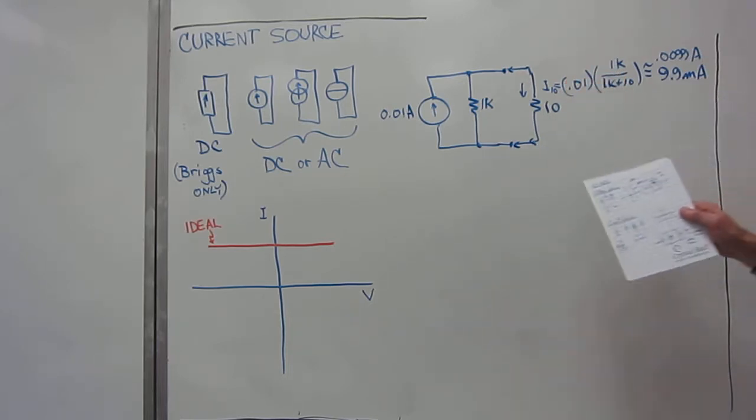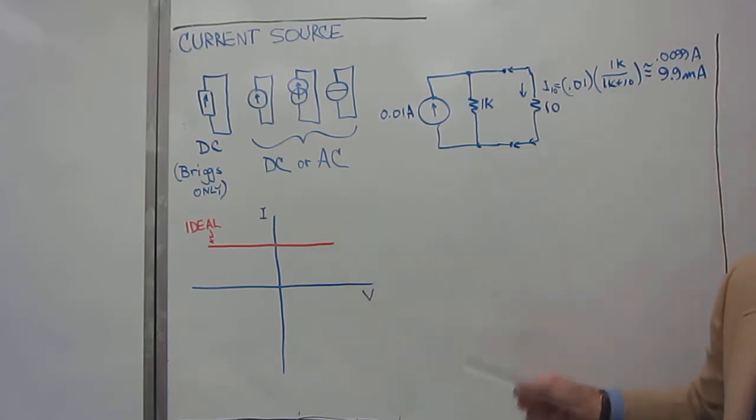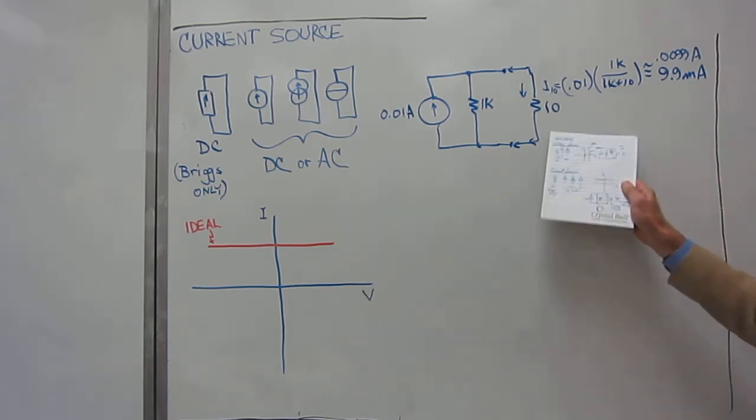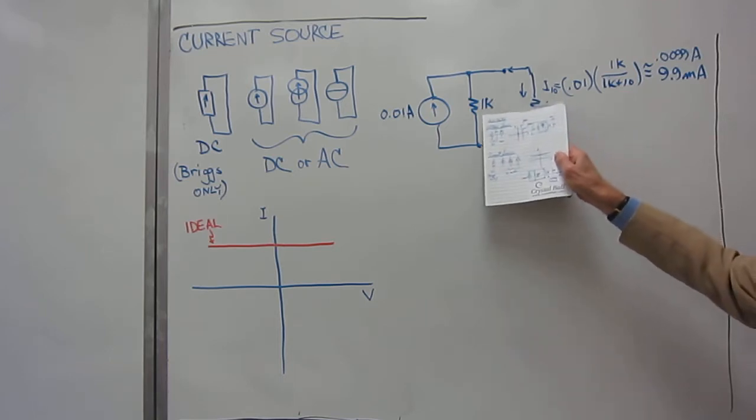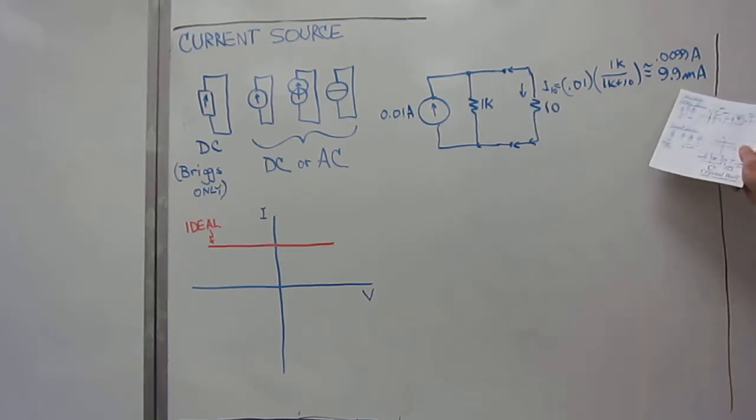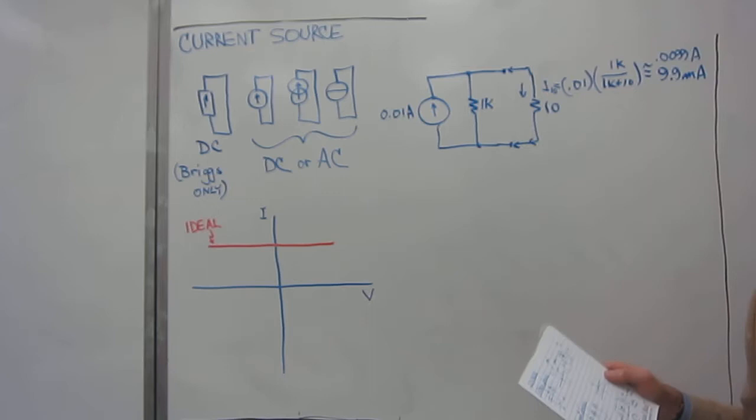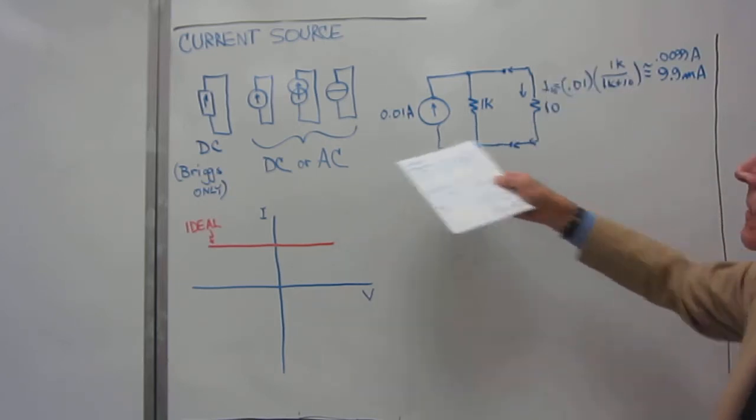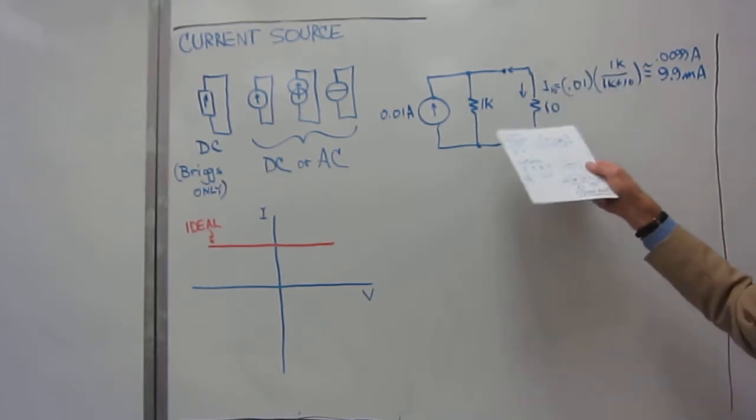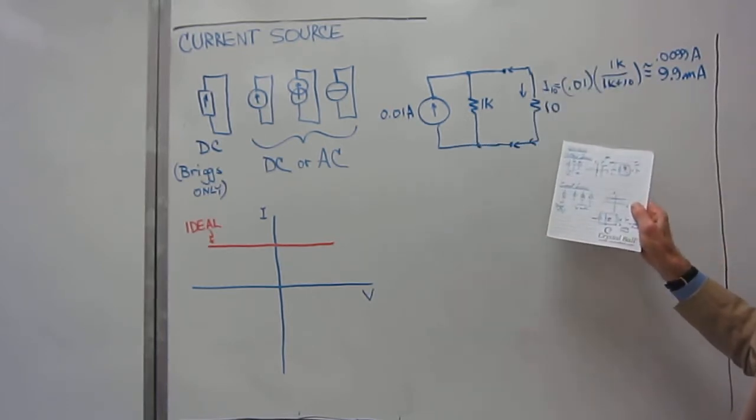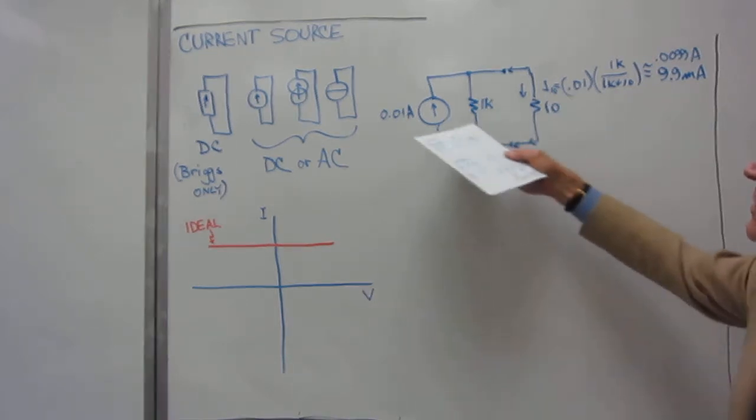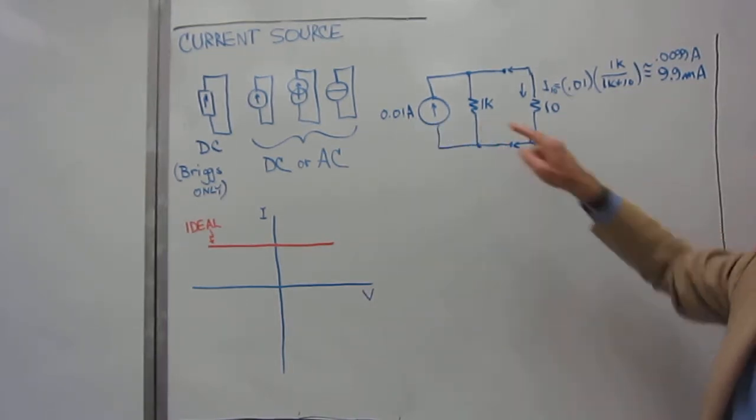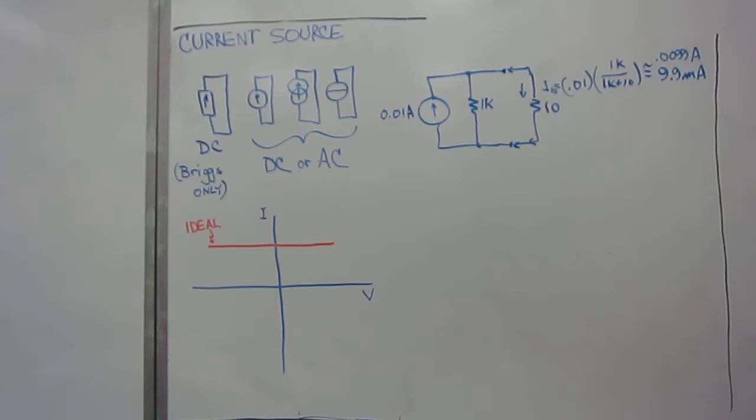So again, 9.9 versus 10, we've seen a little bit of degradation, because it turns out that a tenth of a milliamp is actually going through the 1K resistor. Not all of it is going through the 10 ohm resistor anymore. When it was a short, all 10 milliamps went through the 0 ohms, but when it's 10 ohms, not all 10 milliamps goes through it. 9.9 goes through it, and one-tenth of a milliamp goes through the 1K resistor.